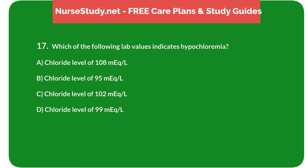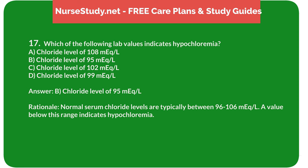Question 17: Which of the following lab values indicates hypochloremia? A. Chloride level of 108 mEq/L. B. Chloride level of 95 mEq/L. C. Chloride level of 102 mEq/L. D. Chloride level of 99 mEq/L. Answer: B. Chloride level of 95 mEq/L. Rationale: Normal serum chloride levels are typically between 96 to 106 mEq/L. A value below this range indicates hypochloremia.